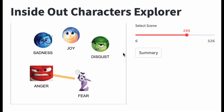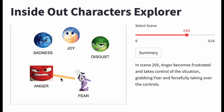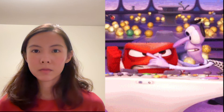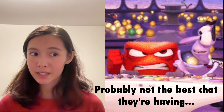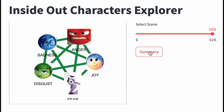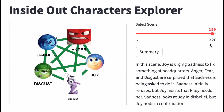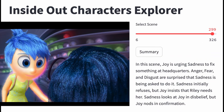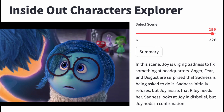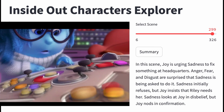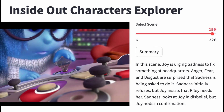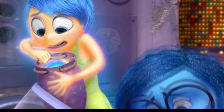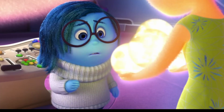Like in this scene, the orange line between Anger and Fear suggests probably not the best interaction they're having. Click summary to learn more about what happens. For example, when Joy accepts the importance of Sadness for Riley's well-being, instead of pushing her away as she would before, Joy encourages Sadness to lead.